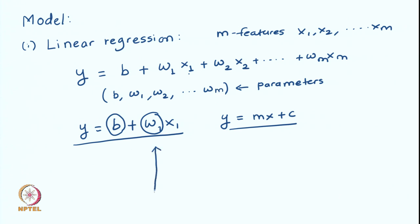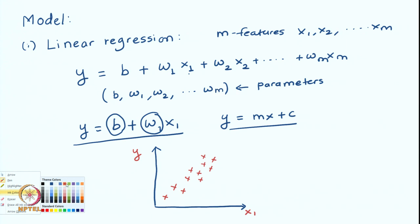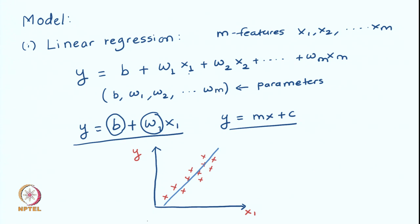Let us try to represent this line geometrically. We have x1 as the feature and y as the output label. This is one such line — it passes the y-axis at some negative number and has some slope. This is an example of the simplest model we can use to map the input feature x1 to the variable y.